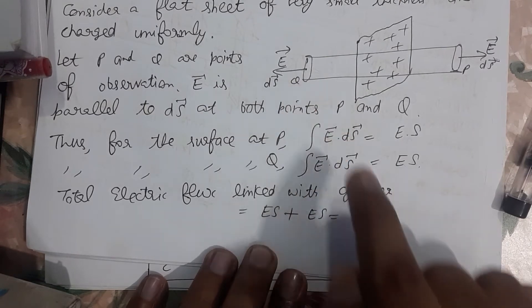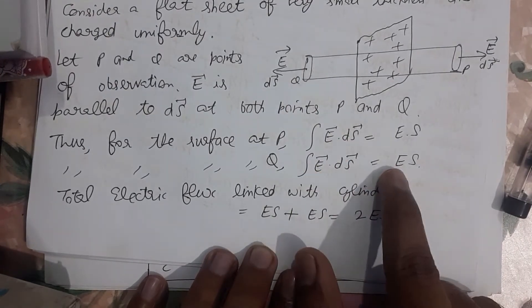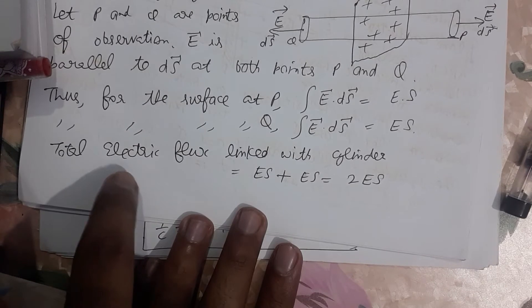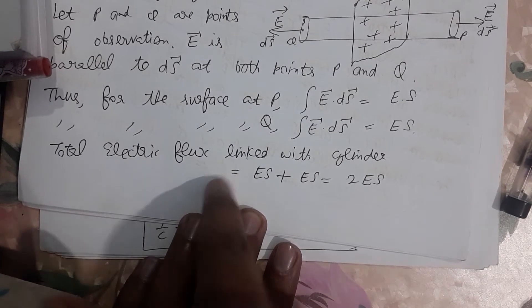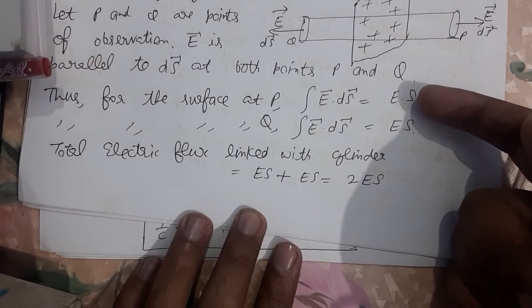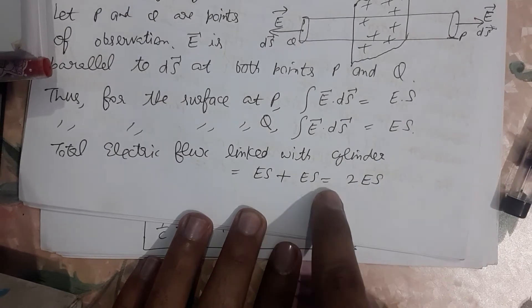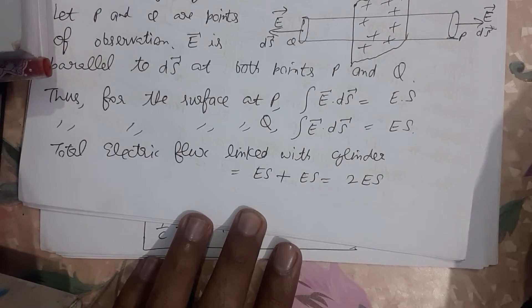Similarly, at point Q, intensity is given as E into s. Now total electrical flux at two surfaces: Es plus Es becomes 2 into E into s.